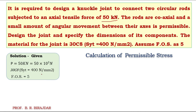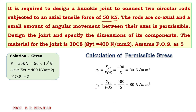Now we will calculate the permissible stresses. Whatever stress we are given — Syt = 400 — is the maximum stress the material can take, but when designing we need the permissible stresses. The permissible tensile stress σt = Syt / FOS = 400 / 5 = 80 newton per mm square. Similarly, the permissible crushing stress = 400 / 5 = 80 newton per mm square. The permissible shear stress τ equals...